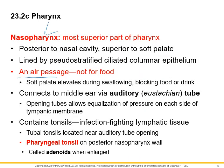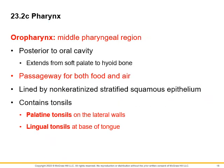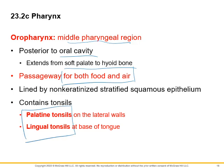The nasopharynx is an air passageway only — not for food. It connects to the middle ear via the auditory tube, also known as the eustachian tube. There are also tonsils here — the pharyngeal tonsil, sometimes called the adenoid. The oropharynx is the middle section, posterior to the oral cavity. It is a passageway for both food and air. It has two tonsils: the palatine tonsil and the lingual tonsil.